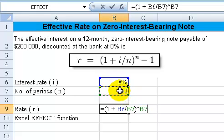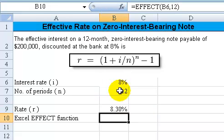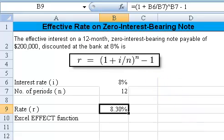And then from there we subtract 1. I'll put a space and minus 1. And when we do that, we come up with an effective rate of 8.3%, which is correct.